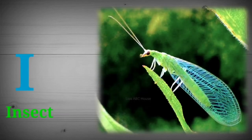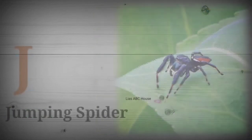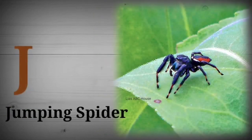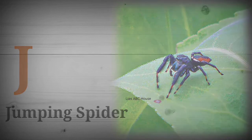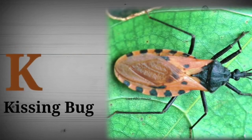I is for Insect. J is for Jumping Spider. K is for Kissing Bug.